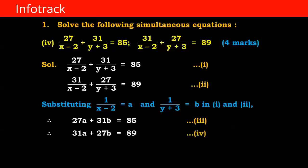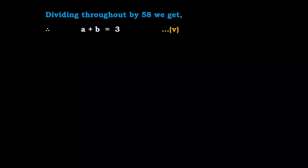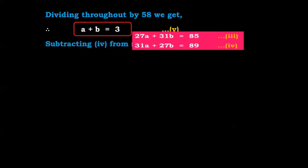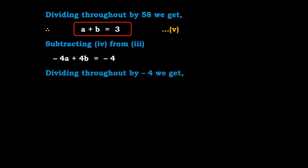We get 27a plus 31b equals 85 — equation number 3 — and 31a plus 27b equals 89 — equation number 4. We can observe there is an interchange of coefficients. Adding equations 3 and 4 we get 58a plus 58b equals 174. Dividing throughout by 58 we get a plus b equals 3 — equation number 5. Subtracting equation 4 from 3 we get minus 4a plus 4b equals minus 4. Dividing throughout by minus 4 we get a minus b equals 1 — equation number 6.